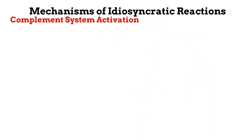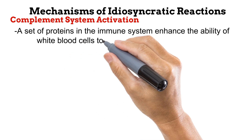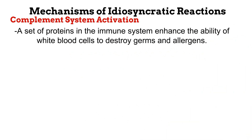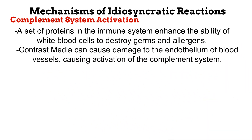Next is activation of the complement system. The complement system is another part of the immune system. It is made of certain proteins. What it does is that it boosts the ability of white blood cells to destroy germs and allergens. In the normal state of the body, when there are no germs or allergens, the complement system is inactive. But once an injurious stimulus occurs, the system is activated. An example of an injurious stimulus is damage to the inner lining or endothelium of blood vessels. Contrast media can cause this damage, leading to activation of the complement system.